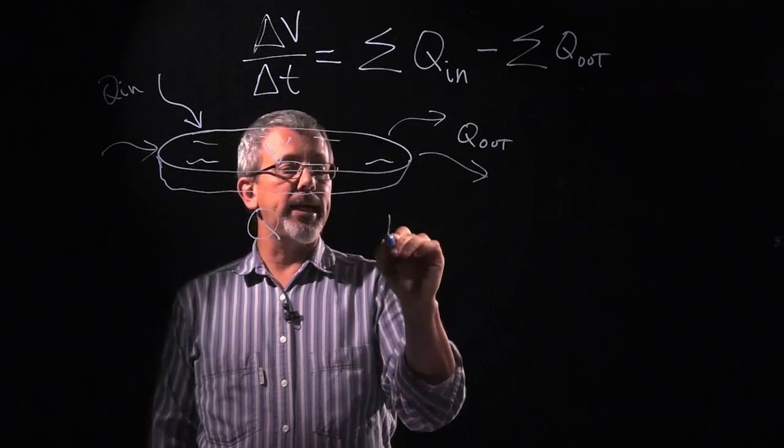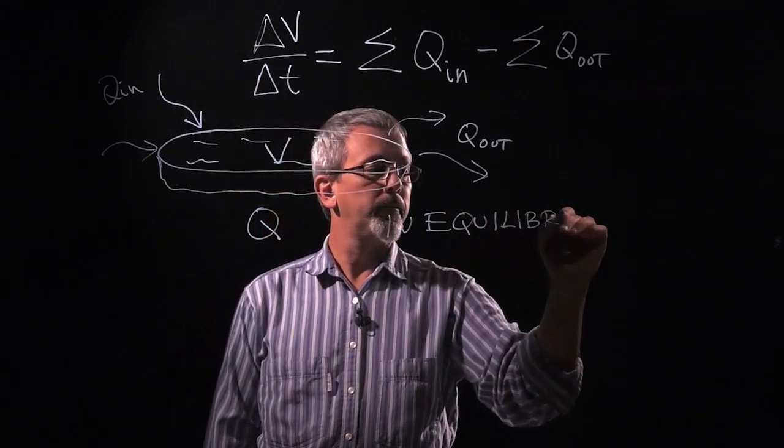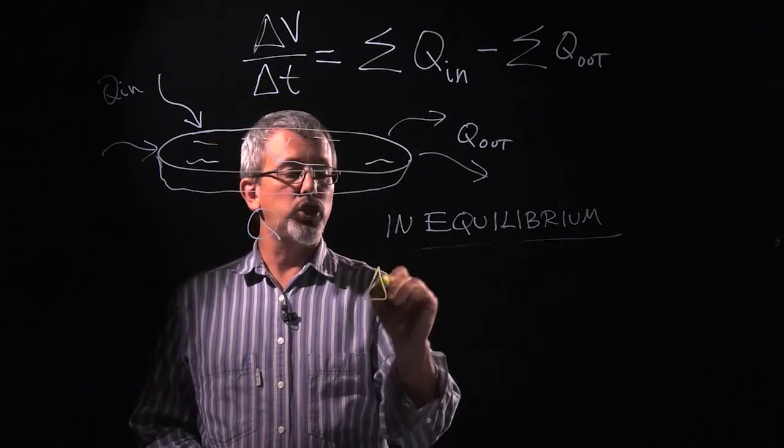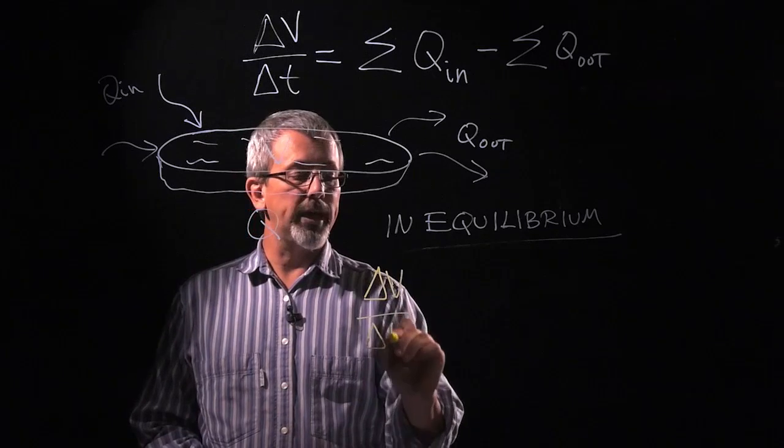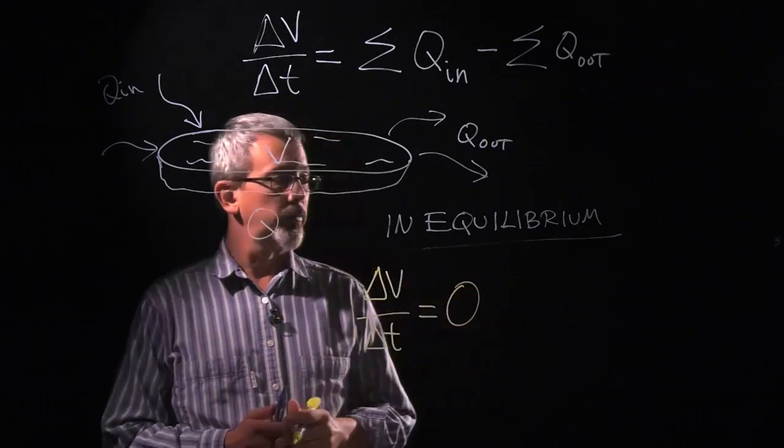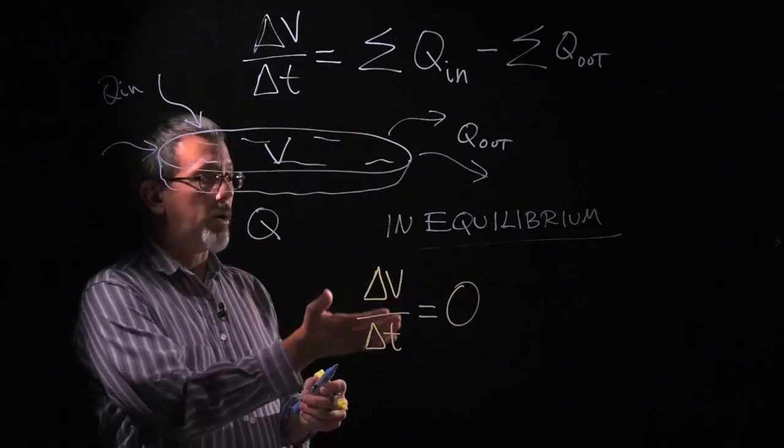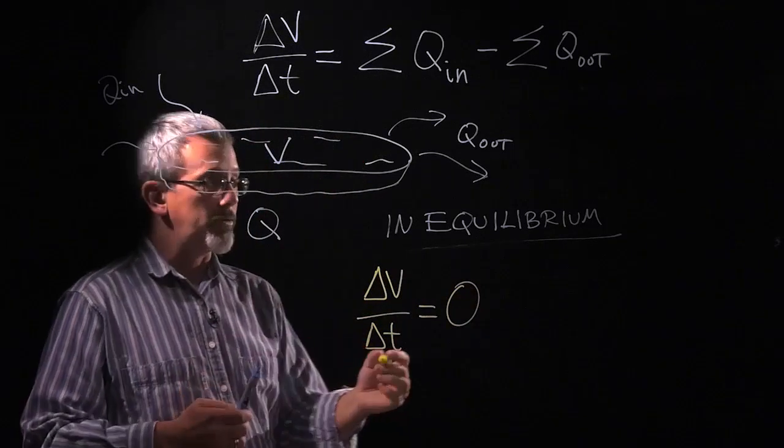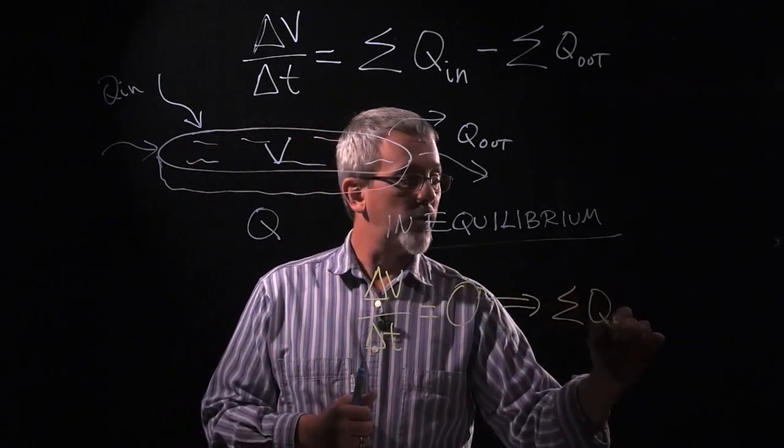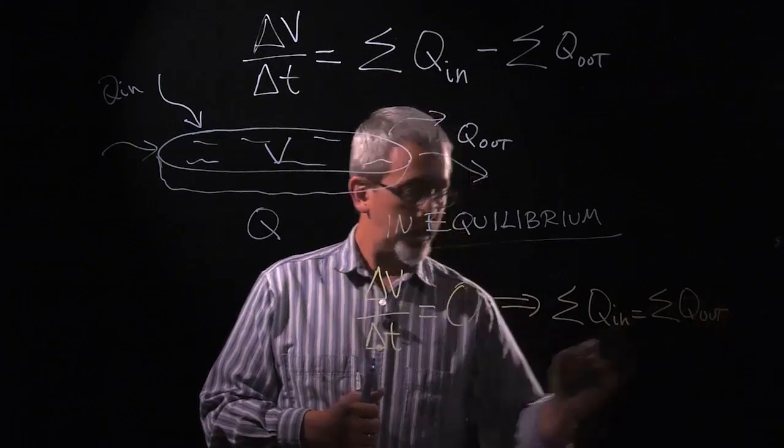Okay, and Eulerian flow is in equilibrium. We're in equilibrium when this change in volume over the change in time is equal to zero. In other words, that the amount of flow in and the amount of flow out sum to zero. Or the other way of saying it is that the sum of our flows in is equal to the sum of our flows out.